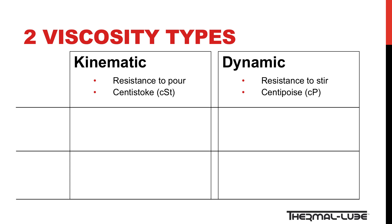Fundamentally, kinematic viscosity refers to a fluid's resistance to pour and is measured in centistokes. Similarly, dynamic viscosity refers to a fluid's resistance to stir and is measured in centipoise.